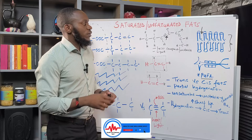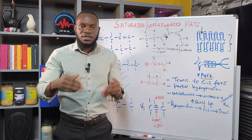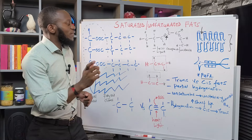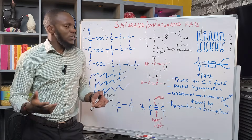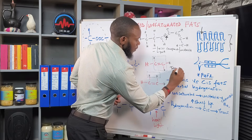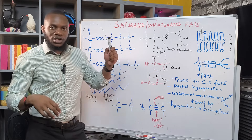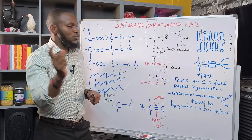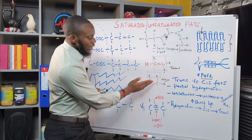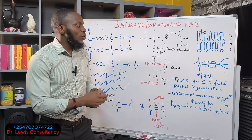On unsaturated fatty acids we have two classifications: cis and trans. When you have a double bond causing the hydrogen ions to be opposite to each other — one lower and one upper on the bond — that is what we call trans, because it's a transverse configuration. But when you have the hydrogen ions on the same side, either lower or upper, that is what we call cis. Cis fats are better off, but trans fats are the ones called trans fats.